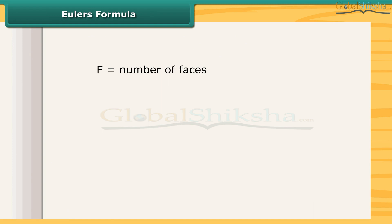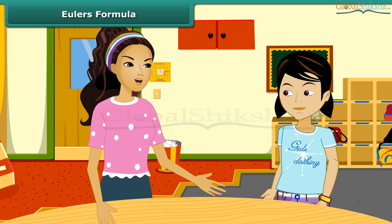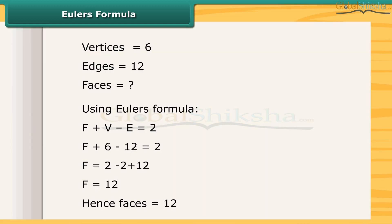If F stands for number of faces, V stands for number of vertices, and E stands for number of edges, then Euler's formula is F + V = E + 2, that is, F + V − E = 2. This formula is true for any polyhedron. If the number of vertices and edges are given, we can find the number of faces using Euler's formula, and if two values are known, we can always find the third.